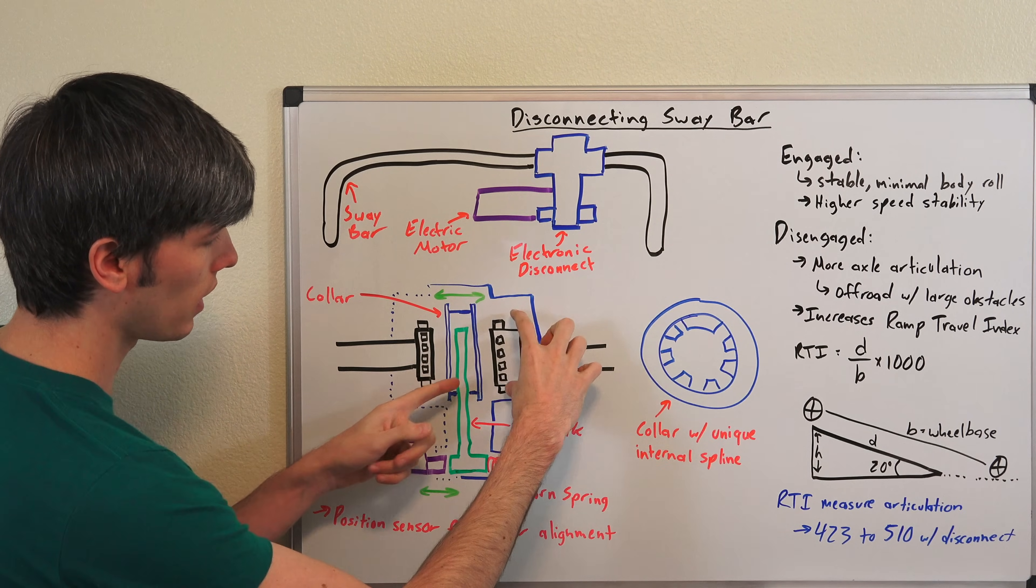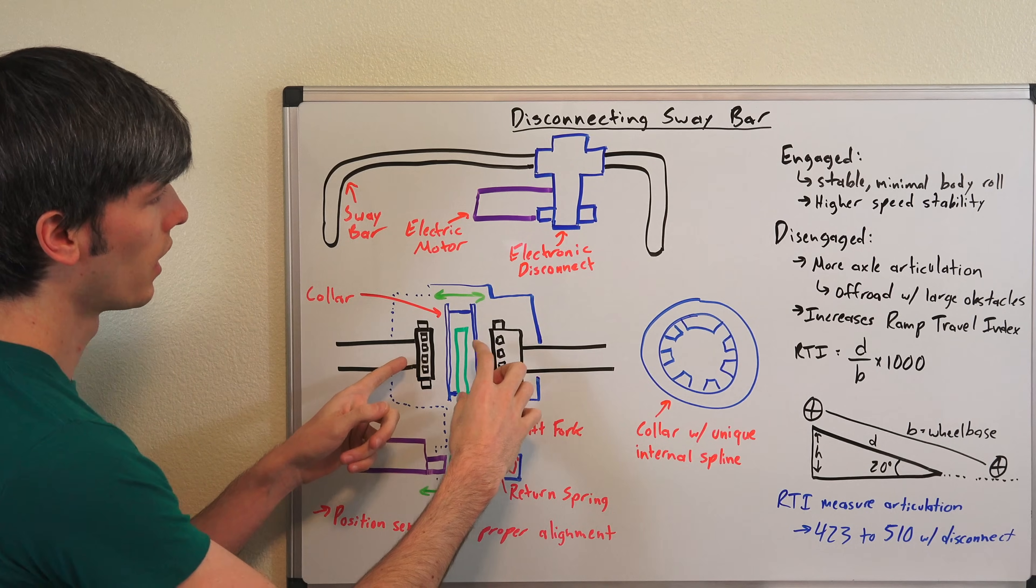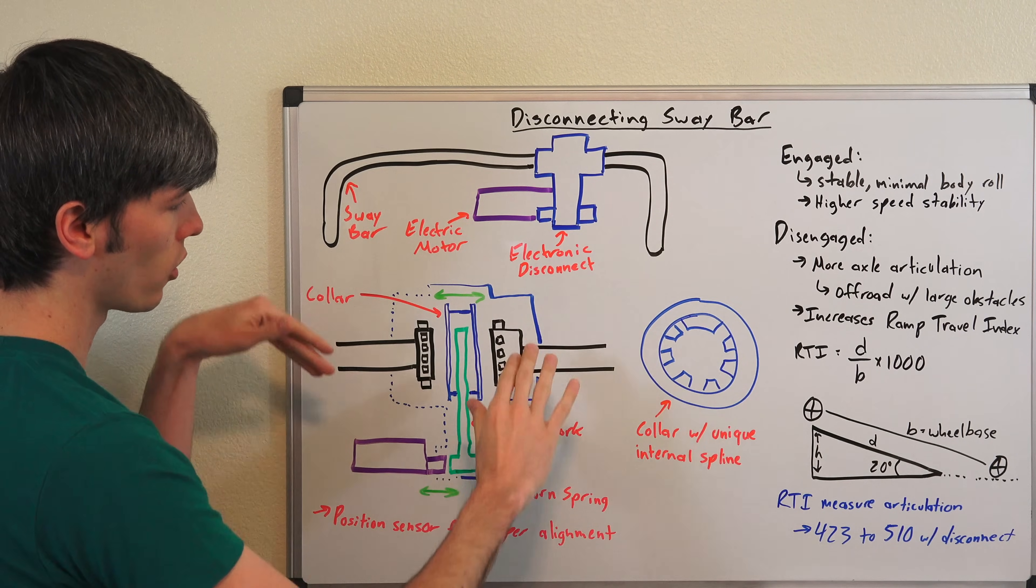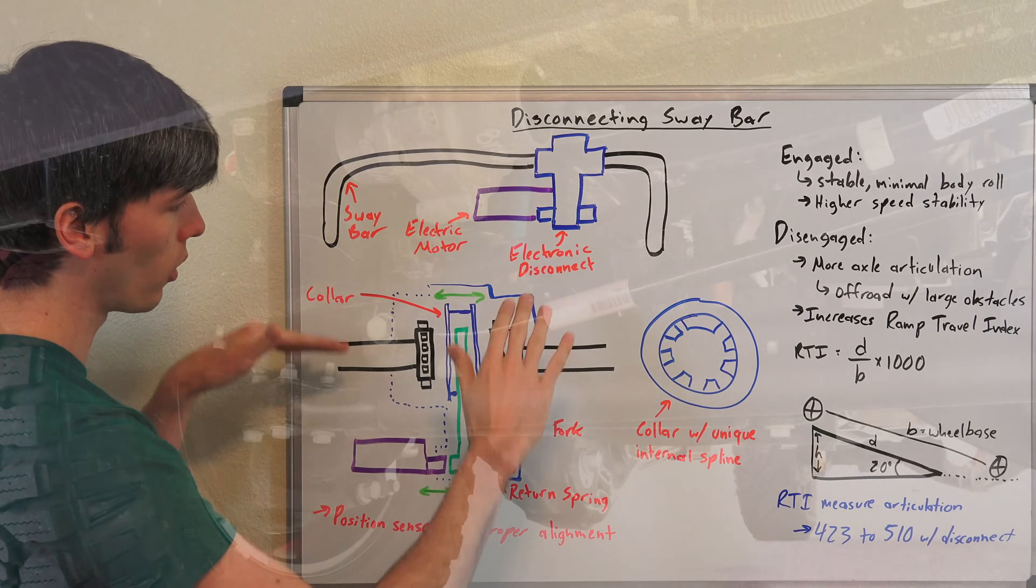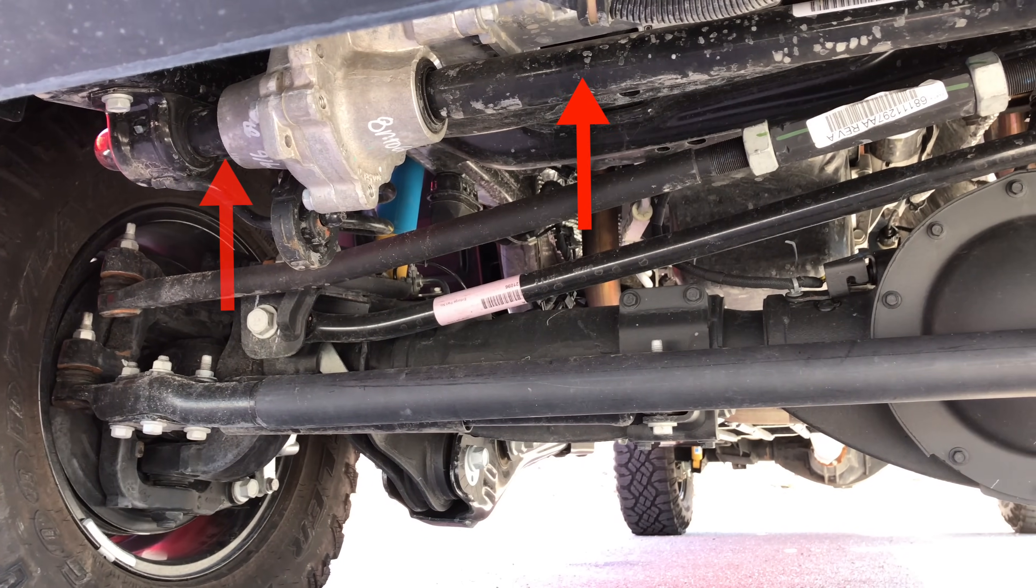And so then this is going to push back over this collar right here. The collar will push back over this gear and then it will no longer be connected to this portion of the anti-roll bar. And so those two portions of the roll bar are free to move about; they won't move together.